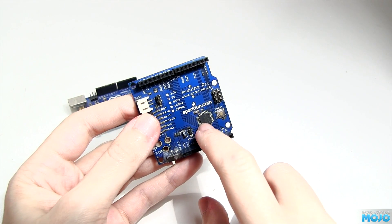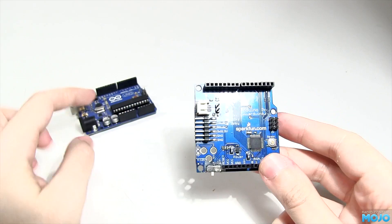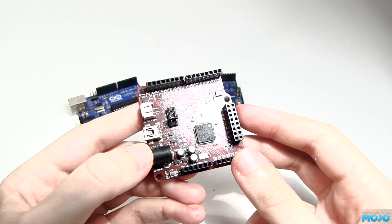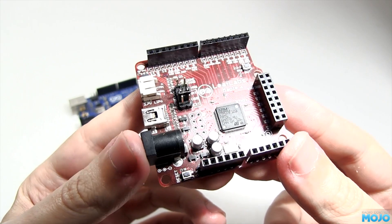These boards come in many different shapes and sizes. This one has the same micro as the Arduino, just in a different package. This one has an ARM Cortex, a relation of the processor used in most phones.